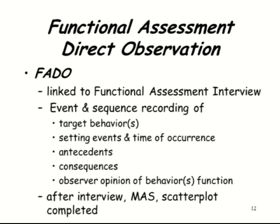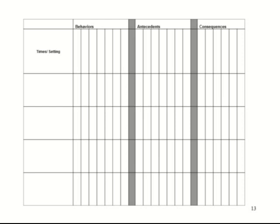You would only use the FADO after doing an interview or scatter plot to develop a hypothesis statement. You use that hypothesis to set up the sheet — a grid where you list different behaviors in one column, the antecedents consistent with your hypothesis, and possible consequences such as escaped the demand, got adult attention, or got peer attention. On the left column I usually put the student's schedule, or you can divide it into half-hour increments. I use a scatter plot first to pick out times of the day when behavior is most likely to occur, and focus my observation time there.